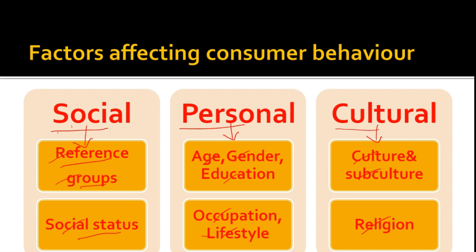Next is social status. Every person in society has a social status, reflected in their standard of living. The second factor is personal factors, which is easy — age, gender, education, occupation, income, and lifestyle. People prefer products based on age, gender, and education. For example, those with education prefer books more. Occupation and income affect the overall purchasing and behavior pattern; a good income increases the standard of living.